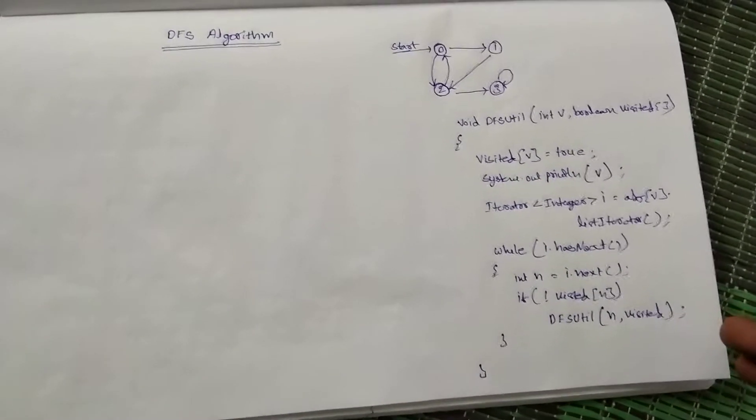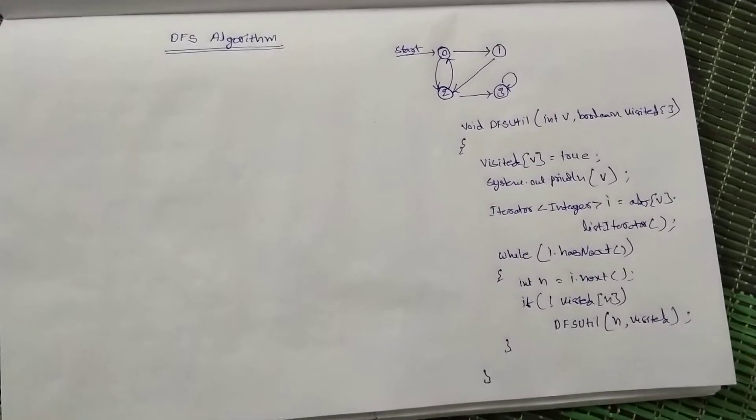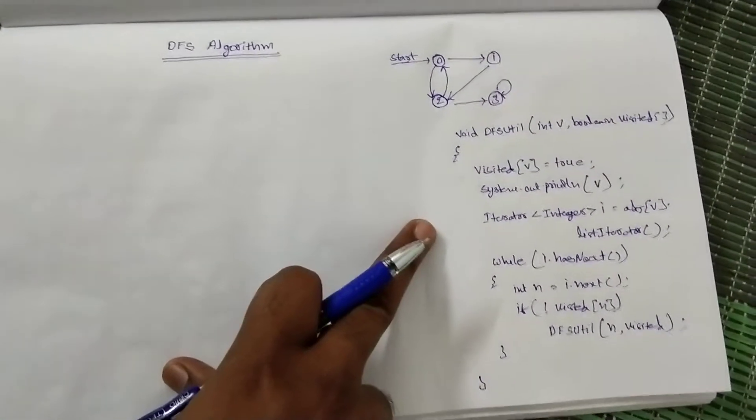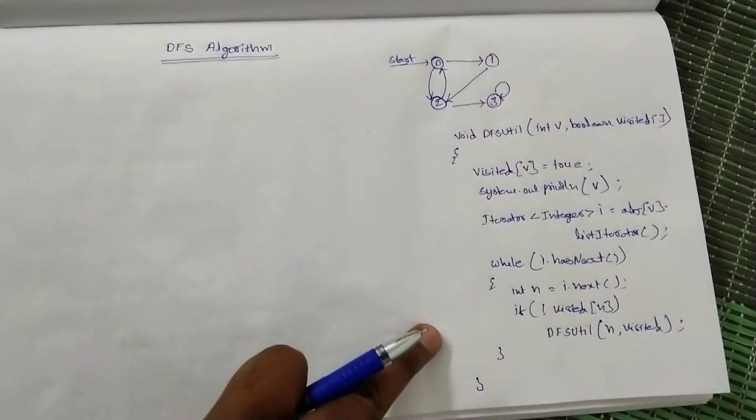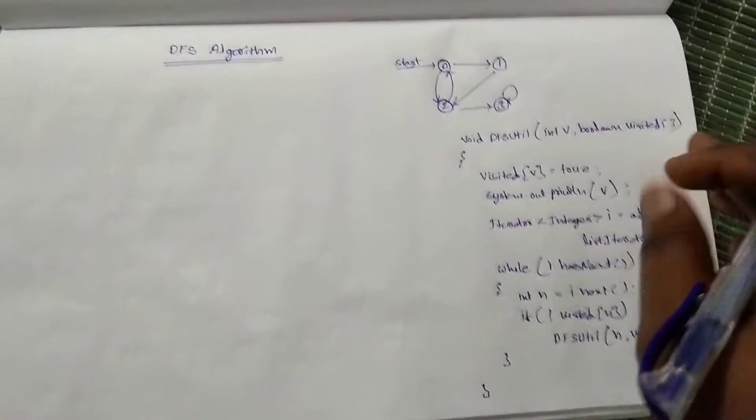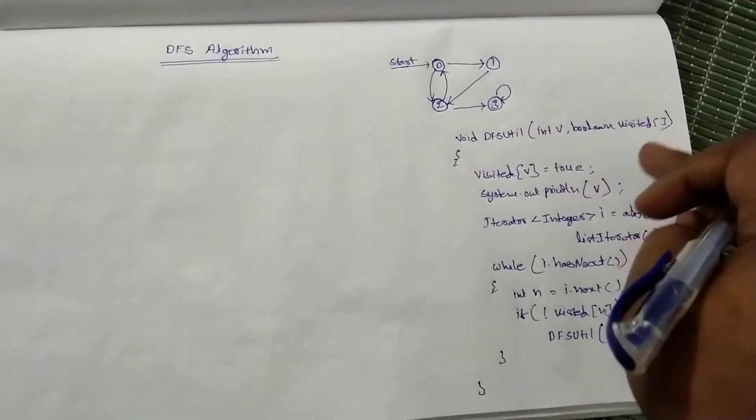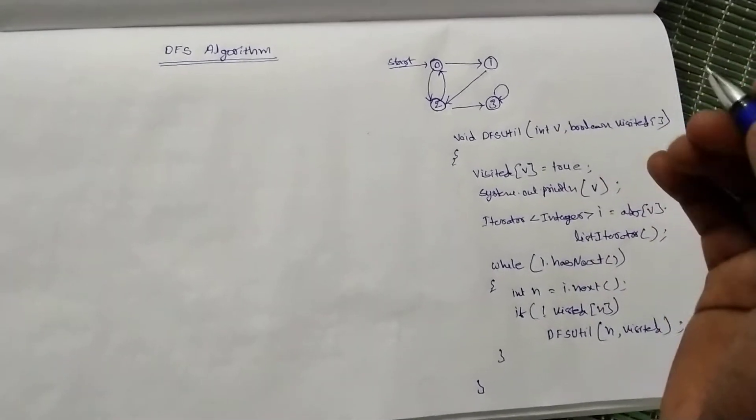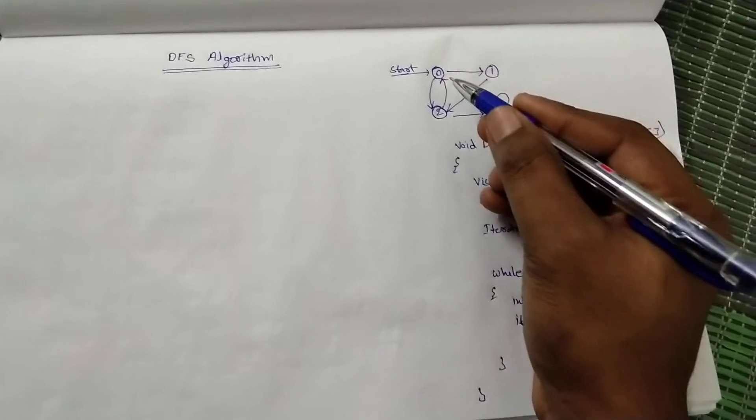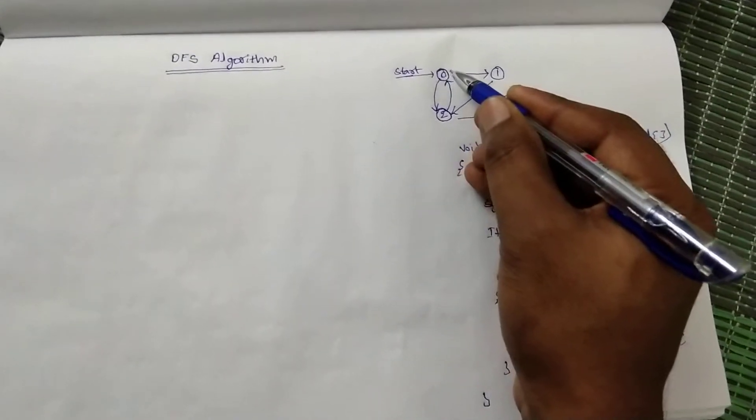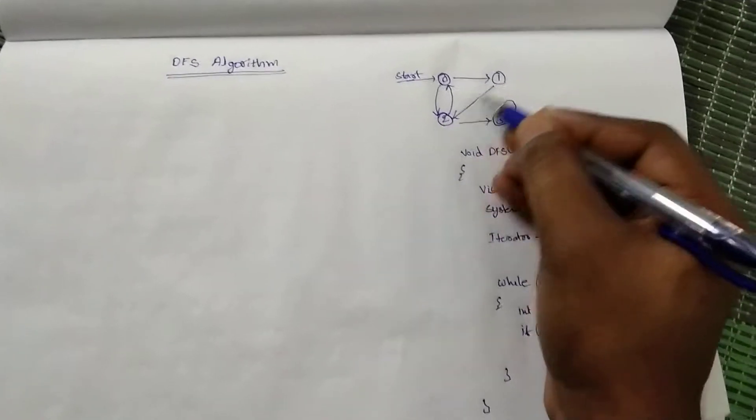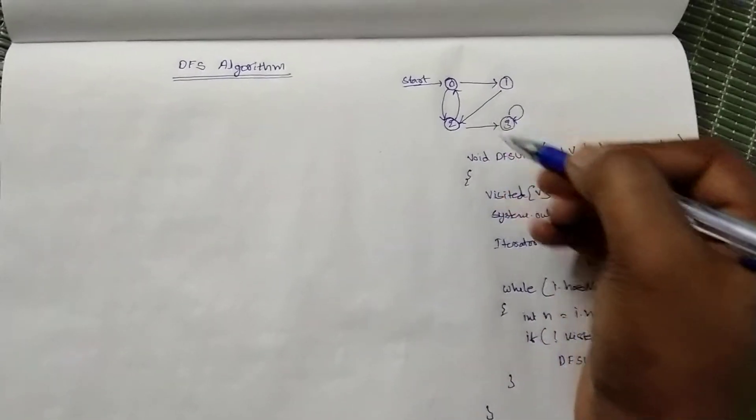We will use recursion. Now we will start with a code snippet. In DFS algorithm, what is the difference from BFS algorithm? Breadth-first search will explore the nodes level by level. Suppose if there is a node 0, then it will explore all its child nodes or adjacent nodes, then it will go to one more level.